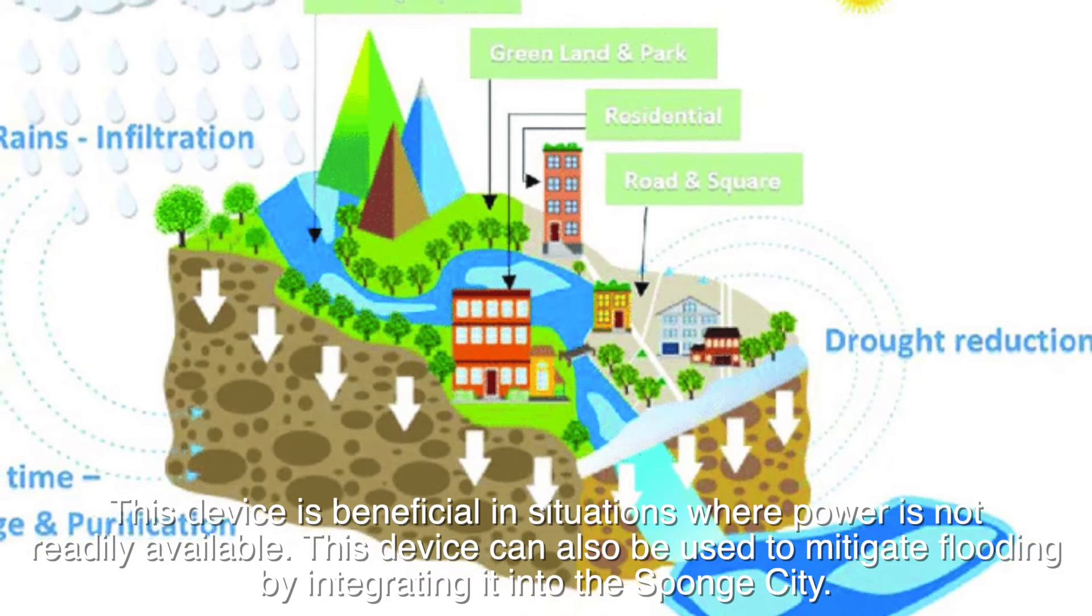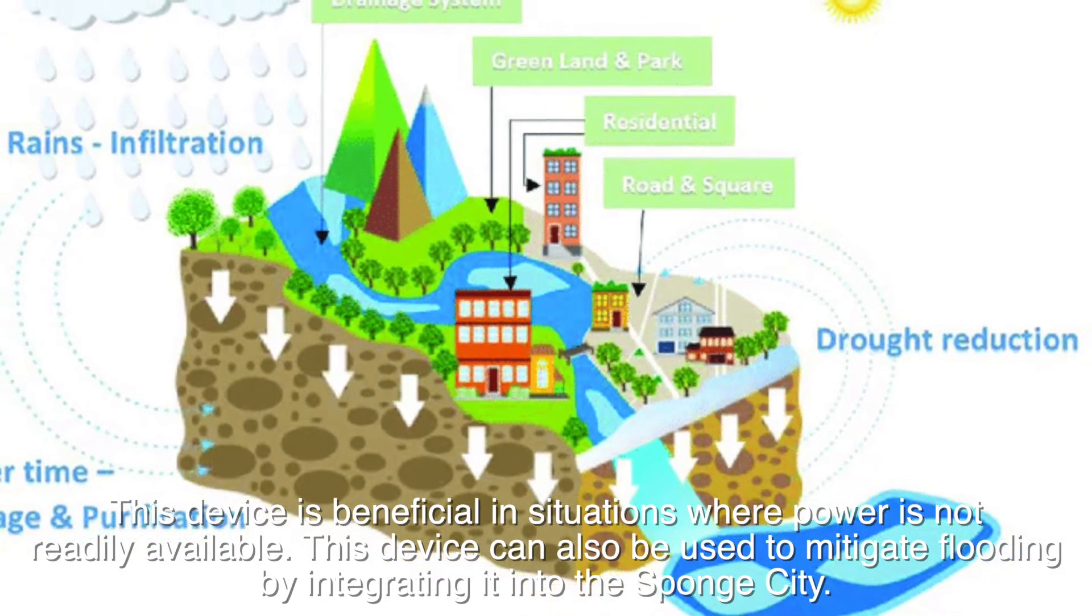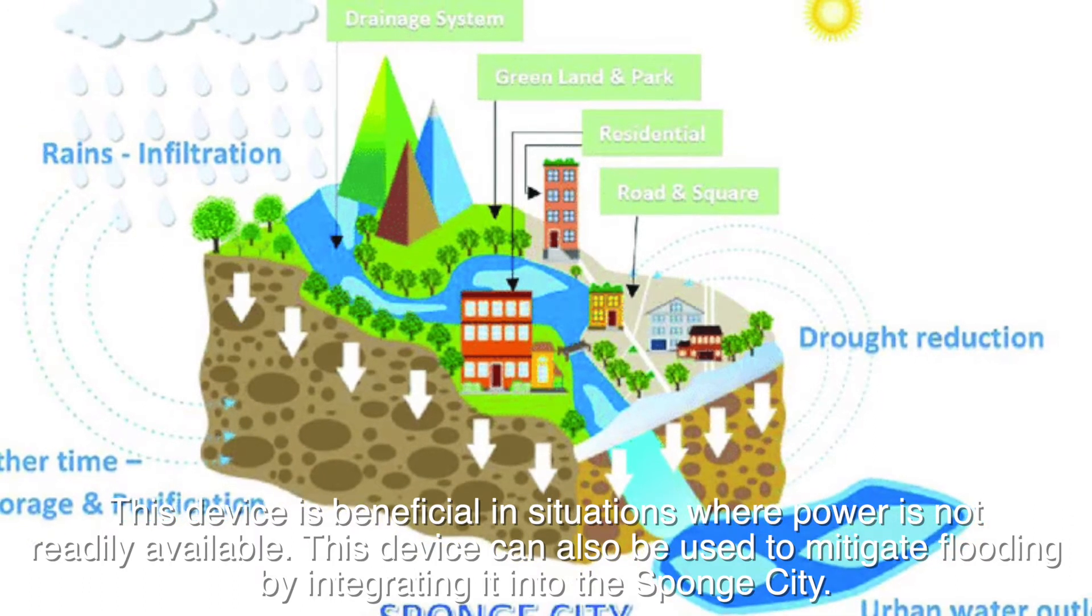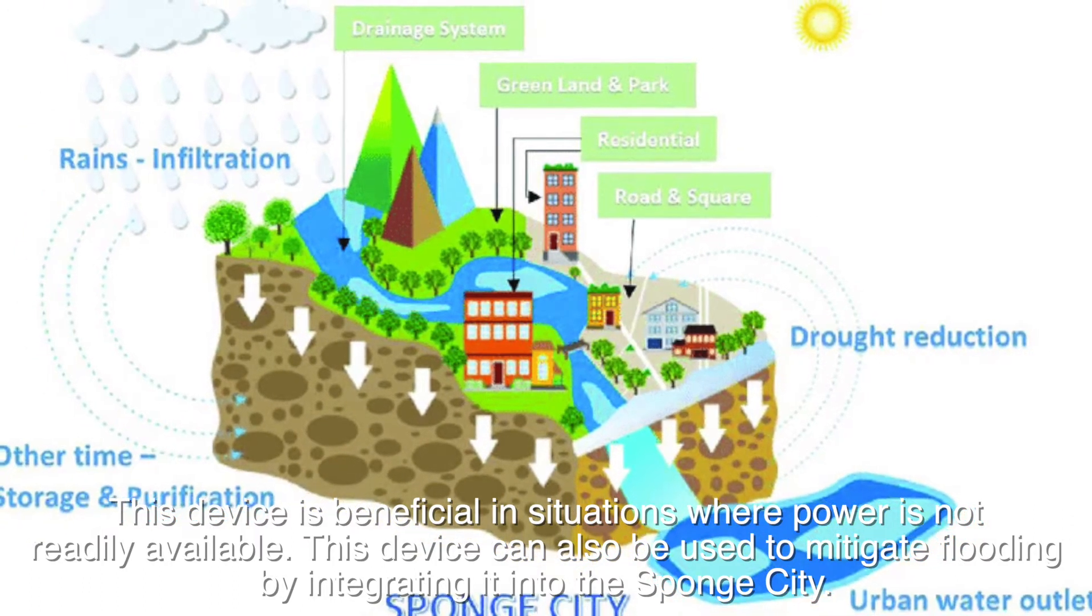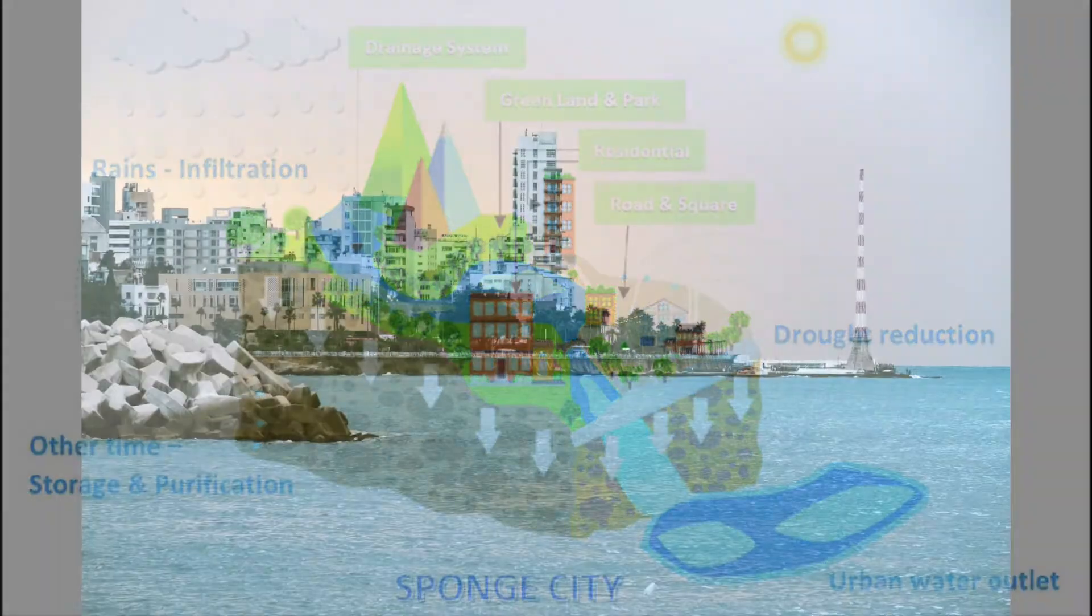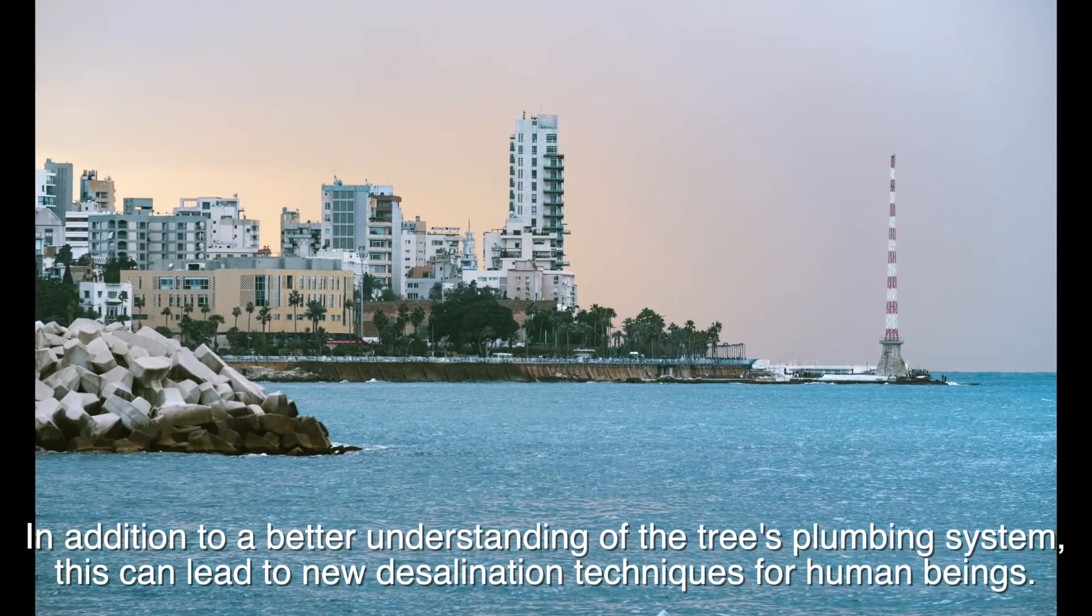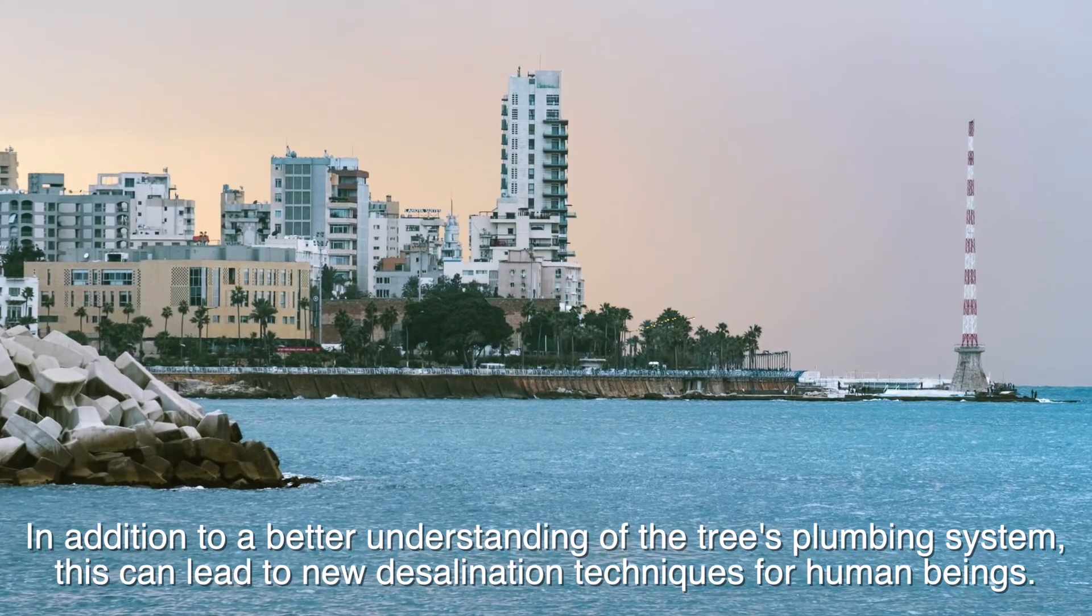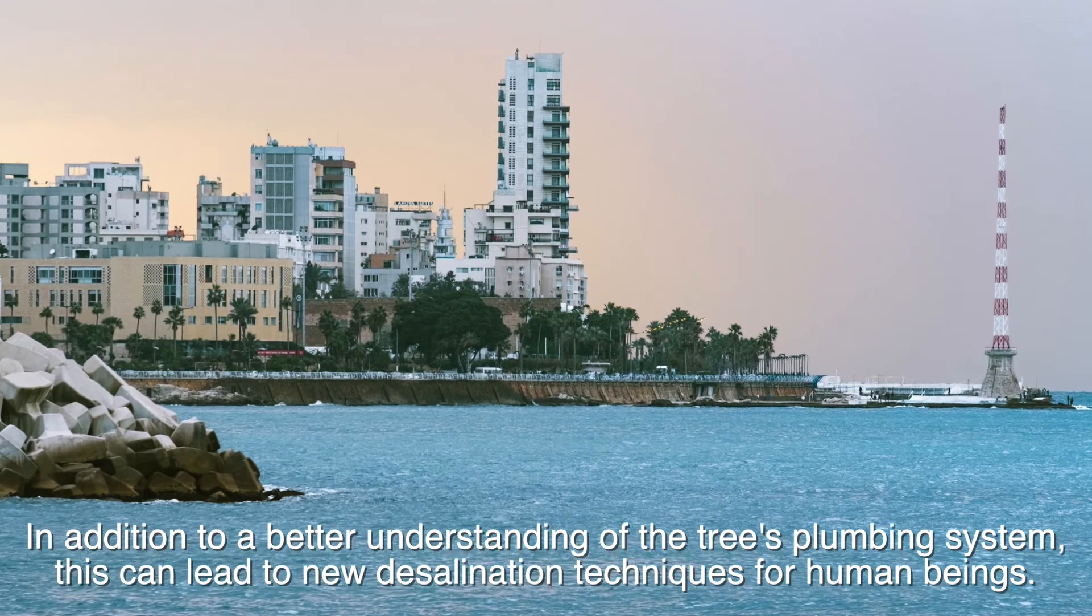This device can also be used to mitigate flooding by integrating it into the sponge city. In addition to a better understanding of the tree's plumbing system, this can lead to new desalination techniques for human beings.